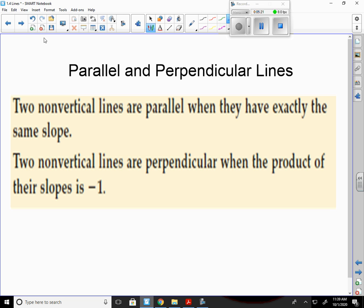Which means that if the original was, say, if one line was, say, 2 thirds, in order for another line to be perpendicular to it, we would take a negative and flip the original fraction. This is a negative reciprocal of this number.